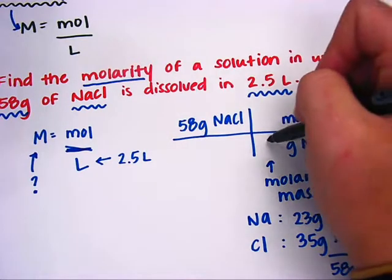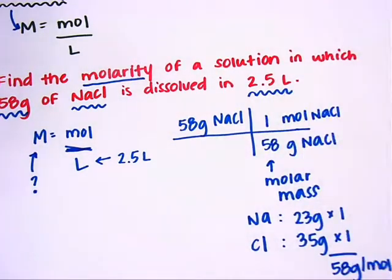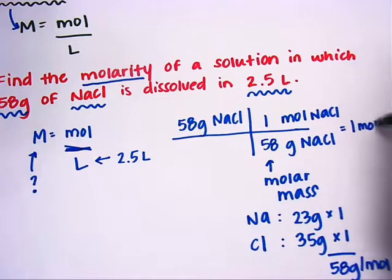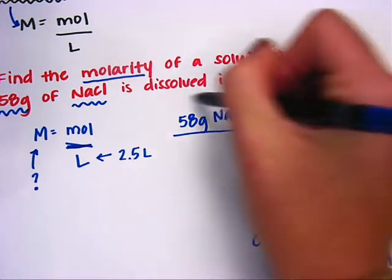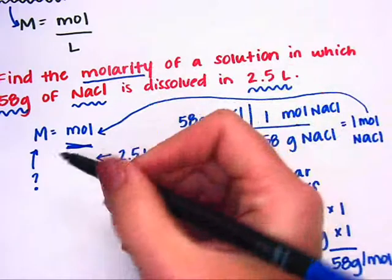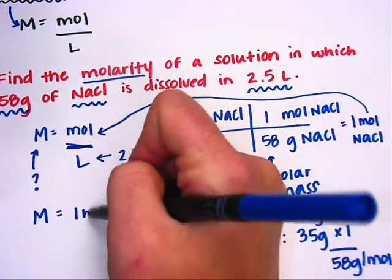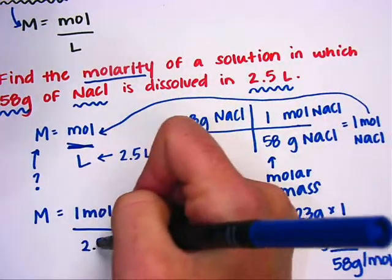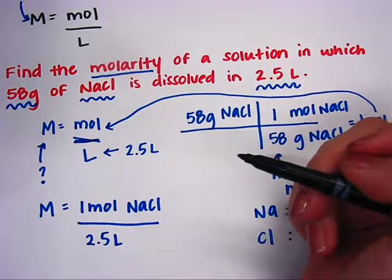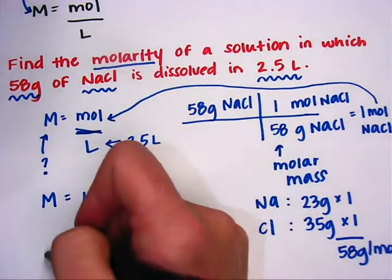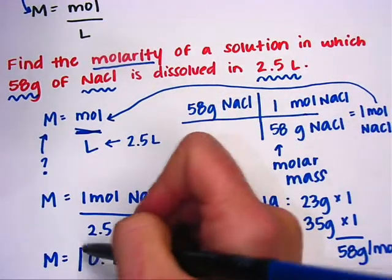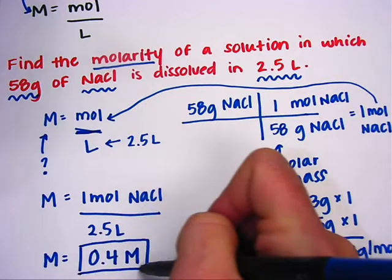I'll plug that in: 58 grams are in 1 mole. 58 divided by 58 gives you 1 mole of NaCl. Then all you have to do is take that information and plug it in. Molarity equals 1 mole of NaCl divided by 2.5 liters. 1 divided by 2.5 gives a molarity of 0.4 molar. Units for molarity are that big M. So that is molarity.